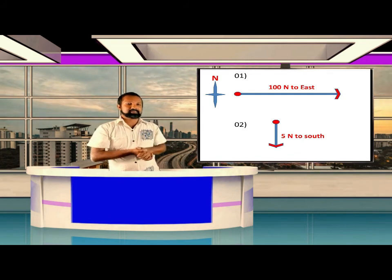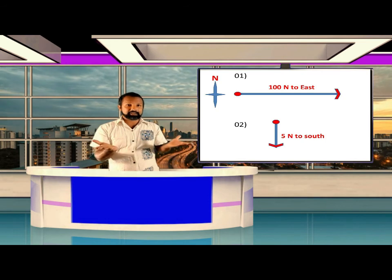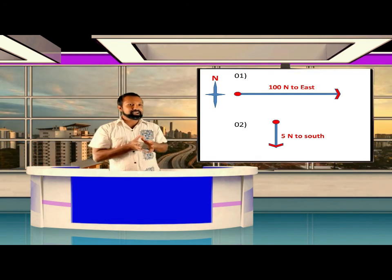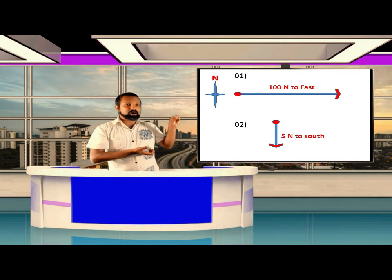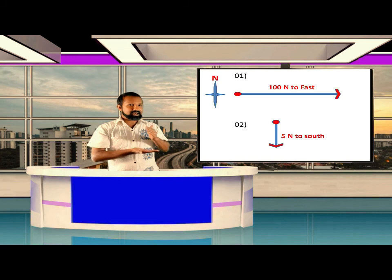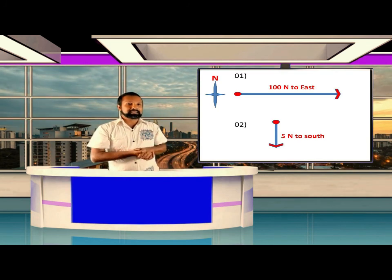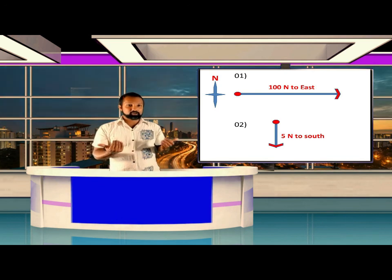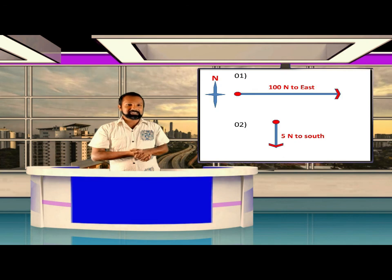In another example, with a scale of 1 Newton equal to 1 centimeter, we mark a point on the paper and draw 5 centimeters towards the south direction, with an arrow at the end to indicate the direction of force. This is how we represent any force using a line diagram.